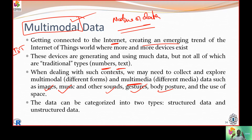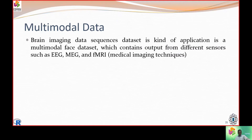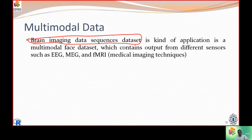Multimodal data includes text, numbers, audio, video, images, and animations — all mixed together. It can be taken up in either structured or unstructured form. One example is brain image data and sequencing datasets. Images are taken from sensors in a scanning room — laser light hits the body, sensors are activated, and data is captured and analyzed using EEG, MEG, and fMRI medical imaging techniques.